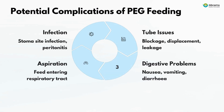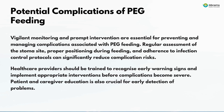Potential complications of PEG feeding include: infection — stoma site infection and peritonitis; tube issues — blockage, displacement, and leakage; and digestive problems — nausea, vomiting, diarrhea, and aspiration of feed entering the respiratory tract. Vigilant monitoring and prompt intervention are essential. Regular stoma site assessment, proper positioning during feeding, and adherence to infection control protocols can significantly reduce risks. Healthcare providers should be trained to recognize early warning signs, and patient and caregiver education is crucial for early detection.